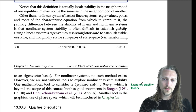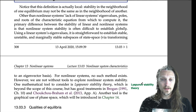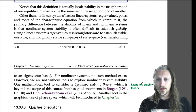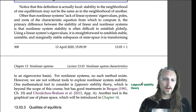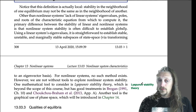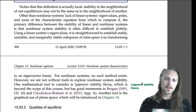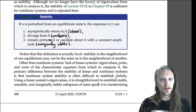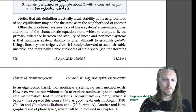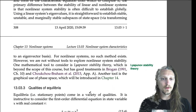However, we are not without tools to explore nonlinear system stability. One mathematical tool to consider is Lyapunov stability theory, which is beyond the scope of this course but has good treatments in Brogan and Chow. This definition is loosely based on Lyapunov stability theory, though the theory is more involved and thorough. Another tool is the graphical use of phase space, which will be introduced in chapter 14.